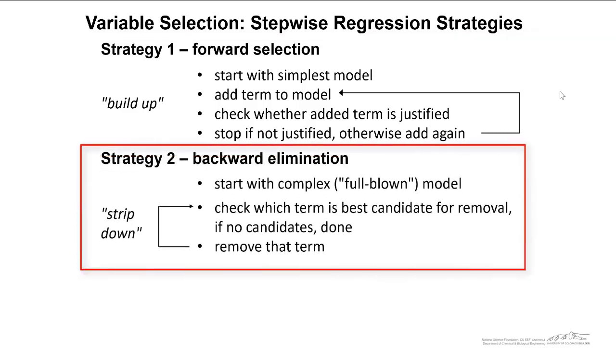A potentially more common one is called backward elimination. We start with a complex, full-blown model. We strip down this model. We check which term is the best candidate for removal. If there are no candidates, then we're done. But if there are some candidates for removal, in other words, their p-values are high, then we remove that term. And we only do one term at a time, and that's really important in this backward elimination. Because as you remove terms from the model, you can actually change the p-values of those remaining regression coefficients.